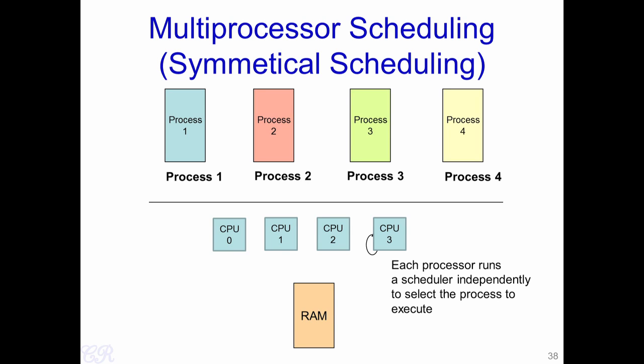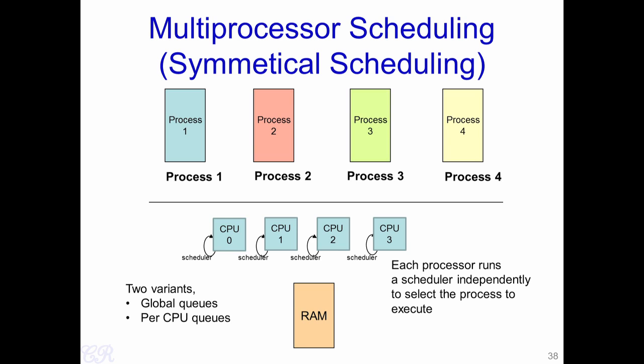Another multiprocessor scheduling scheme is the symmetrical scheduling scheme. Here, instead of a single CPU which decides for all processors in the system, each CPU runs its own scheduler which is independent of each other. Therefore, each CPU at the end of a time slice decides which process it is going to execute next. There are two variants of the symmetrical scheduling scheme: one is with a global queue and the other with per-CPU queues.